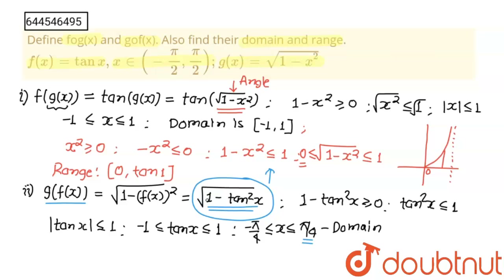The minimum of tan²x is 0 (since it is a perfect square, at x = 0, which is included in [-π/4, π/4]), giving 1 - 0 = 1 as the maximum value. So √(1 - tan²x) ranges from √0 = 0 to √1 = 1. Therefore, the range of g(f(x)) is [0, 1]. Thank you students.